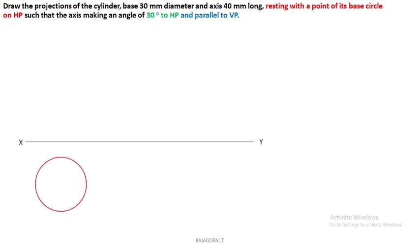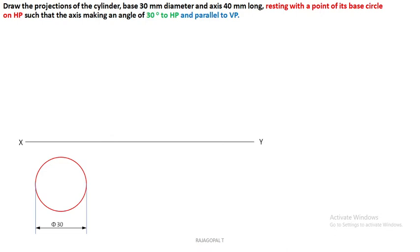First, draw the XY line, then draw the top view circle with a diameter of 30 mm. Extend the extension lines, and the dimension to represent here is a diameter of 30 mm. Being a circle, we can divide it into a number of divisions for better accuracy — either 4, 6, 8, or 12 divisions. We will go with 8 divisions.